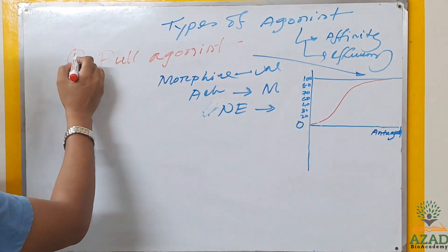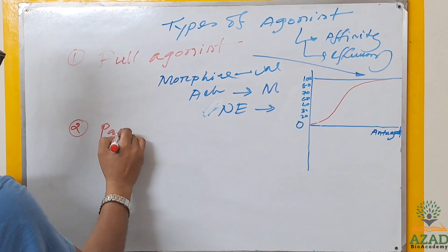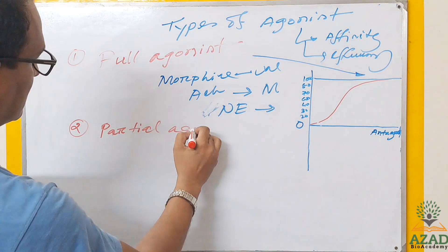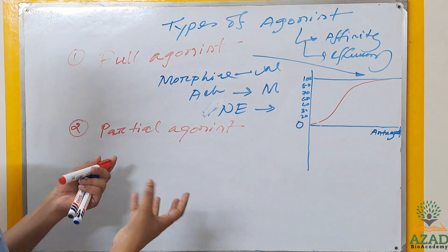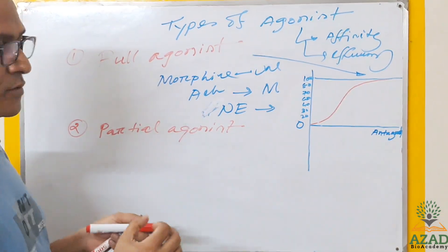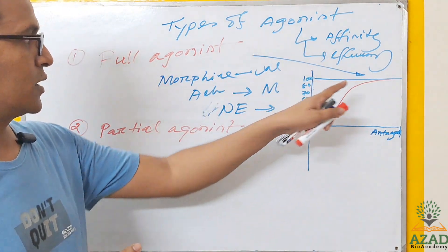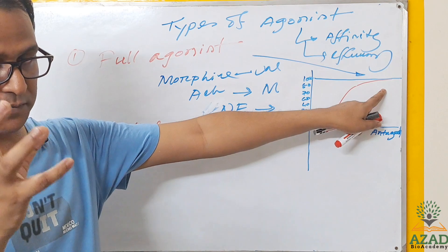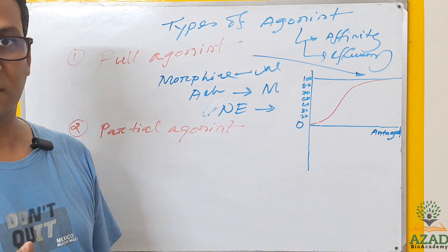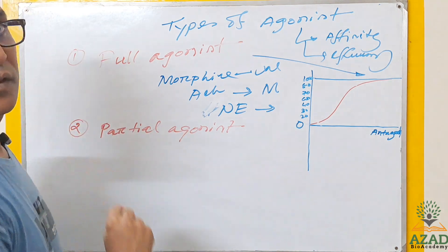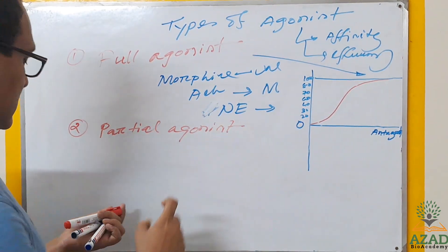The second type is partial agonist. Partial agonist means sub-maximum activity — not 100%. It will give its function at 30%, 60%, 70%, or 80%, but not 100%. That is what is meant by sub-maximum, and that defines the partial agonist.